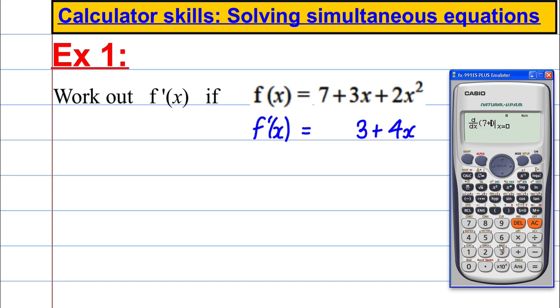So let's put in 7 plus 3x plus 2x squared. And we have to tell it an x value. Let's say, for example, let's put something quite obscure in. Let's put a 7th. So let's put x is equal to 1 over 7. So the calculator will work out this differential and put x as a 7th in, and it tells you the answer is 3.5714. 3.5714.